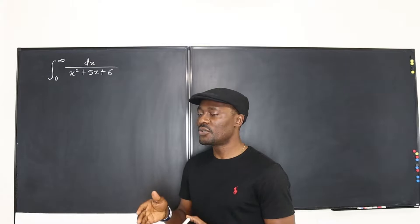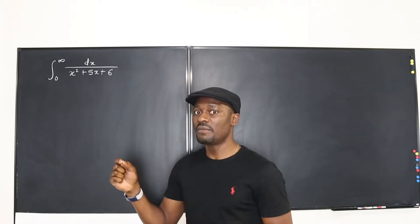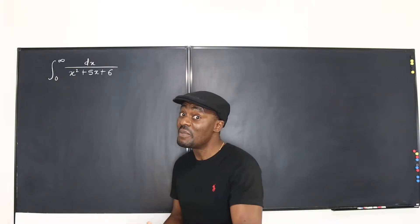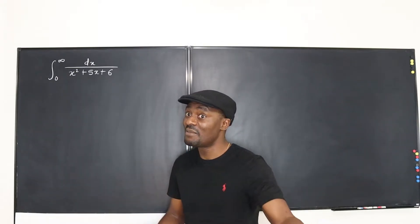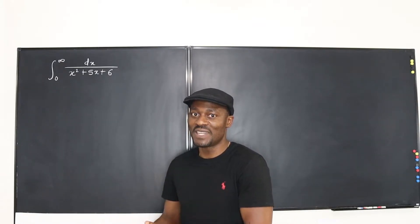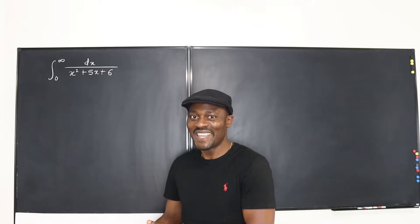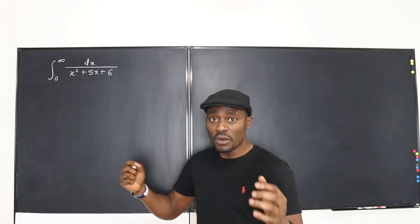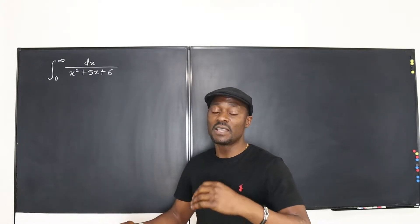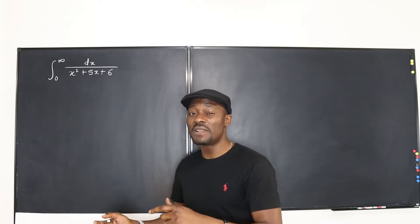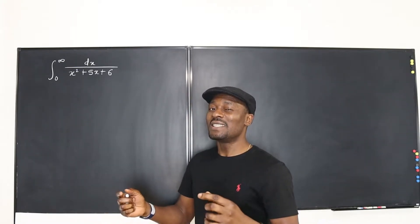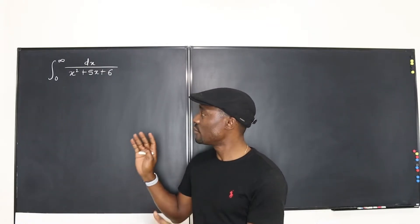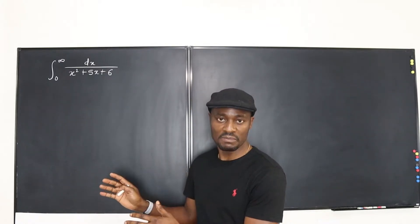Why? Because you can't plug in infinity into anything. You can only take limits at infinity because nobody gets to infinity. So when the problem says one of the limits is infinity or negative infinity, you know it's an improper integral — you have to rewrite the problem.